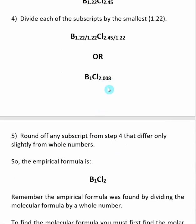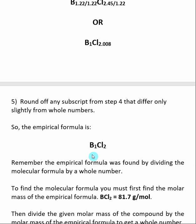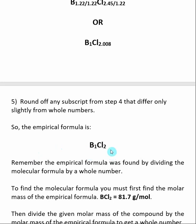Since 2.008 is very close to 2, we round it to get whole numbers. The empirical formula is 1 boron to every 2 chlorines, or B1Cl2. After this step, we can only determine the empirical formula — we do not know if this is actually the molecular formula. From percent compositions, we can only determine the empirical formula.